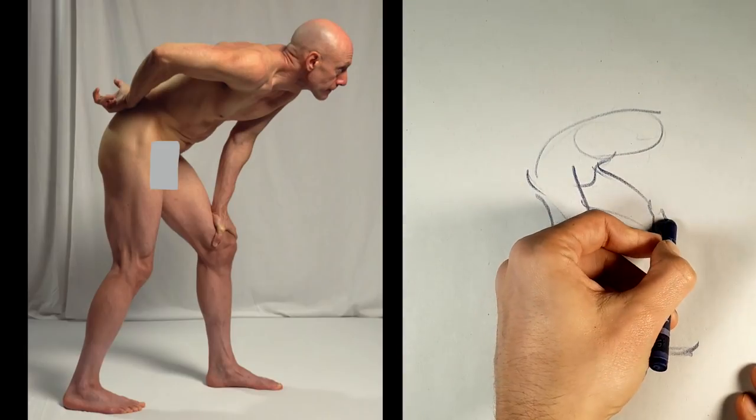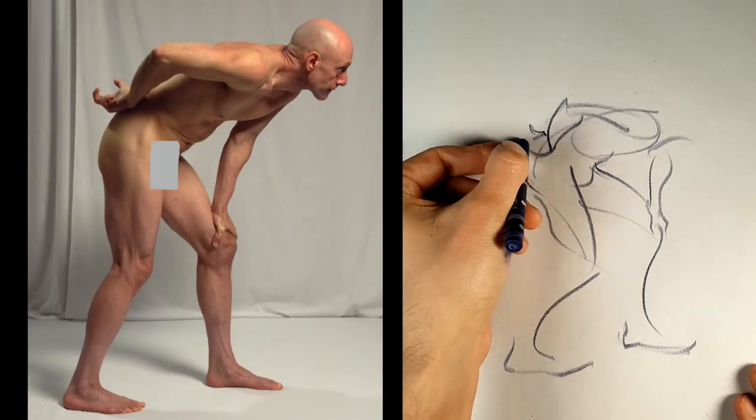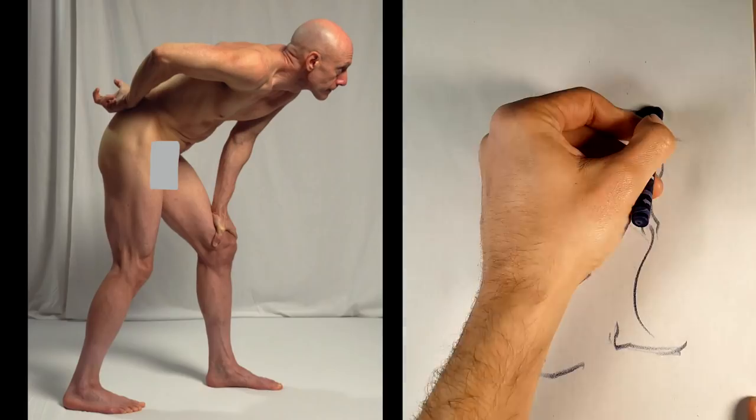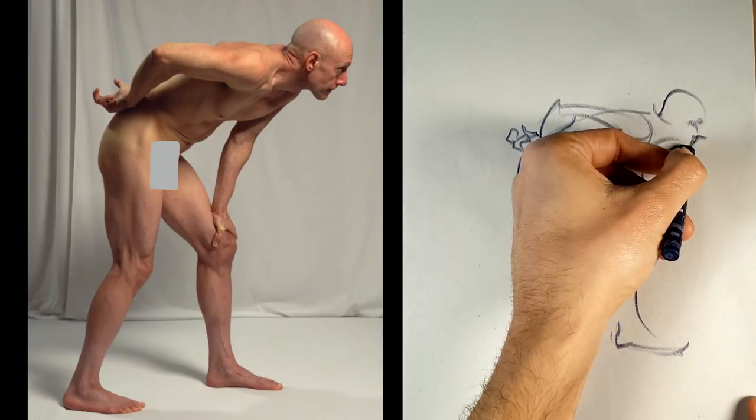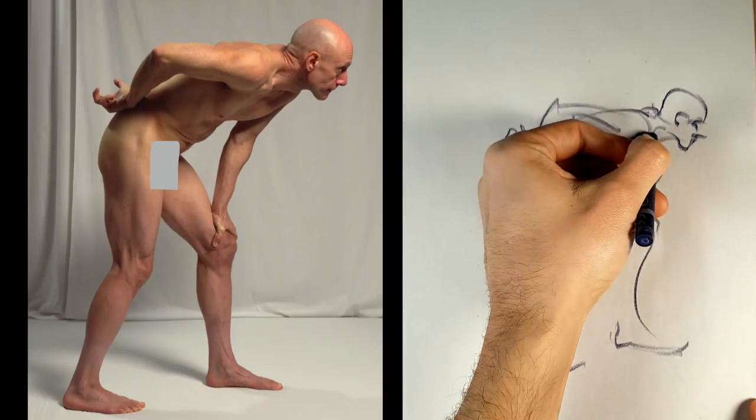So here's some more of Richard's notes. He said, I try to pull my lines, especially when defining a large action or shape, because that allows gravity to do all the work and allows me to focus on controlling the line.